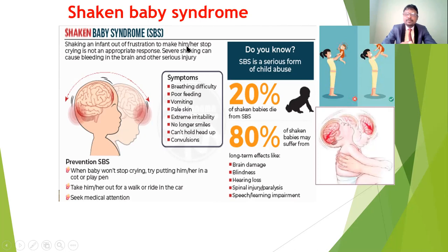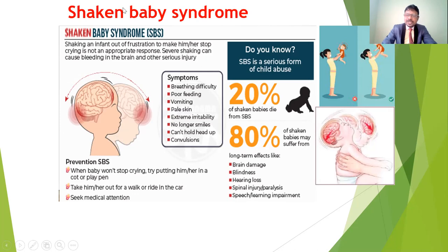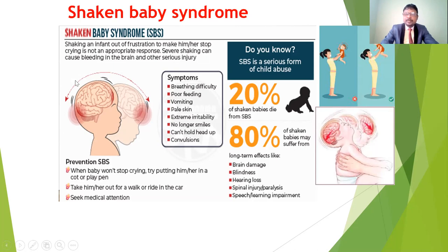If the baby is crying and you give them shaking activities — shrugging or shaking the body in an improper manner — it may cause shaken baby syndrome. Severe shaking can cause bleeding inside the brain and other serious injuries. In the baby's crying time, mothers, caregivers, or babysitters may shake or lift the baby, and if they shake in improper directions, the baby may get bleeding inside the brain.